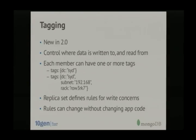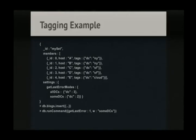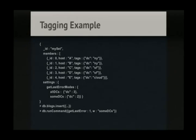Those tagging rules can be changed without changing your application code — an administrator can change them by re-tagging the replica set servers. For example with five nodes tagged across New York, San Francisco, and cloud data centers, you can set a write concern called 'all DCs' which requires acknowledgement that data has been committed to all three data centers. There's also 'some DCs' which requires the data to be committed to at least two data centers.